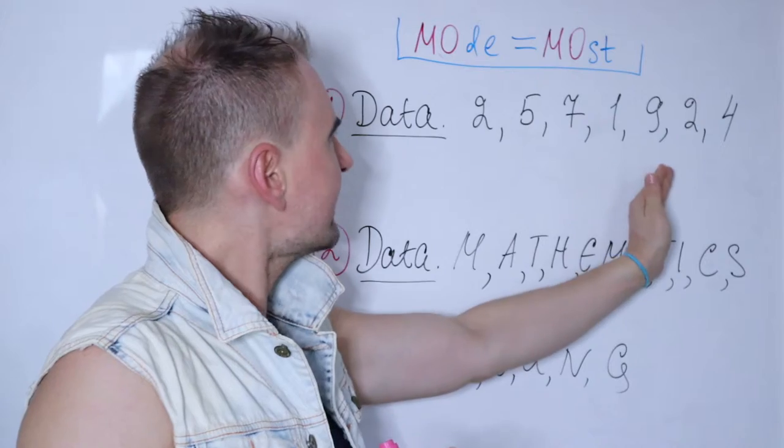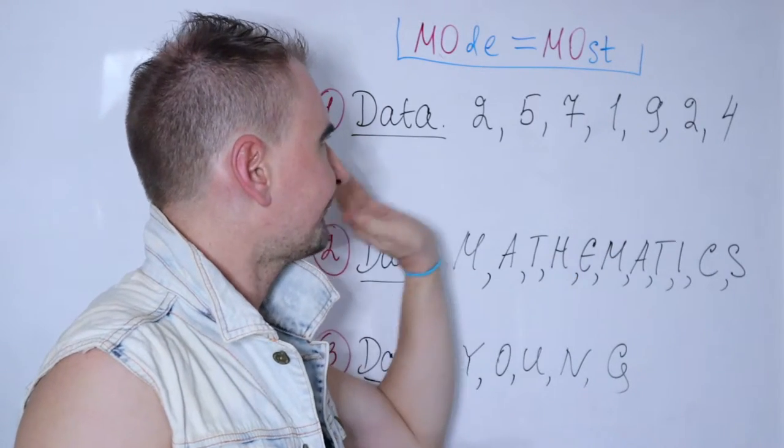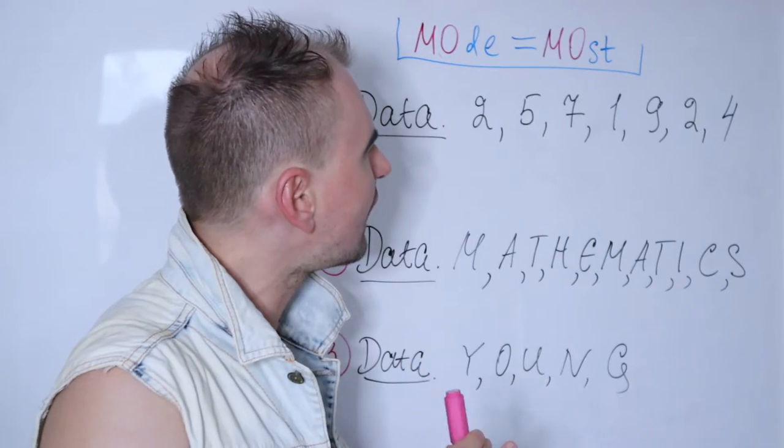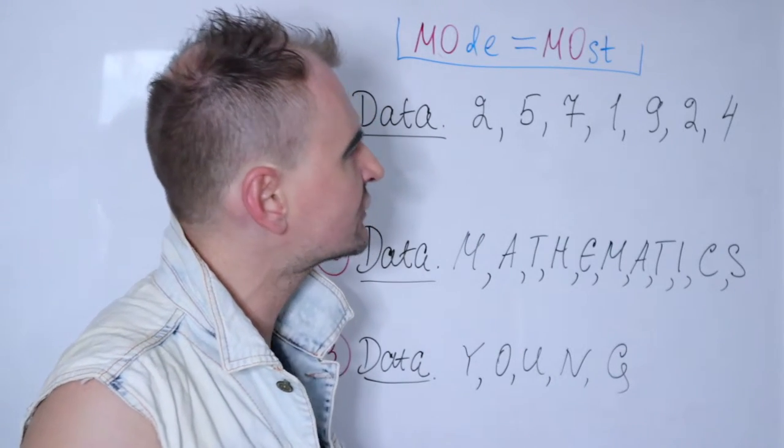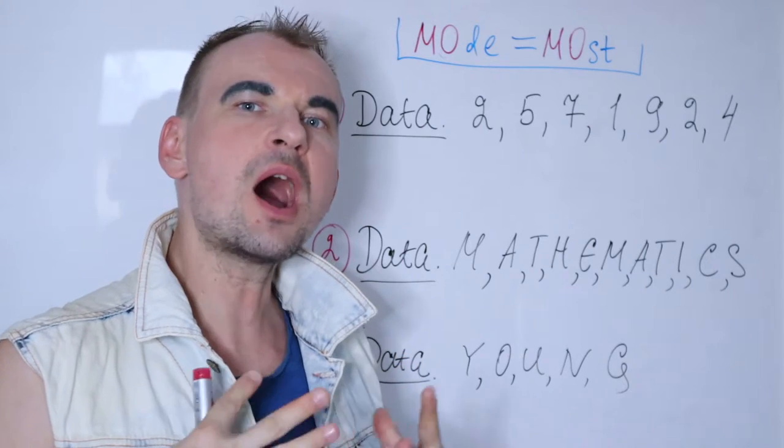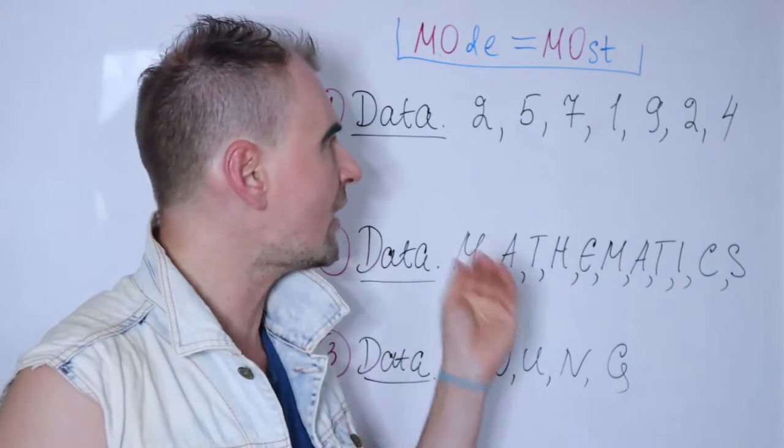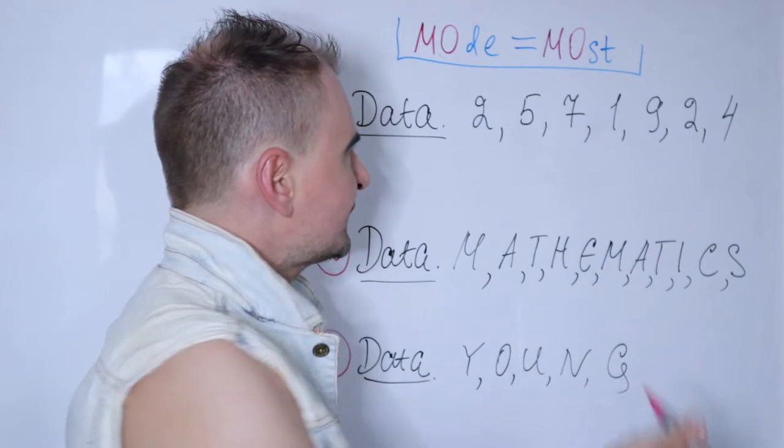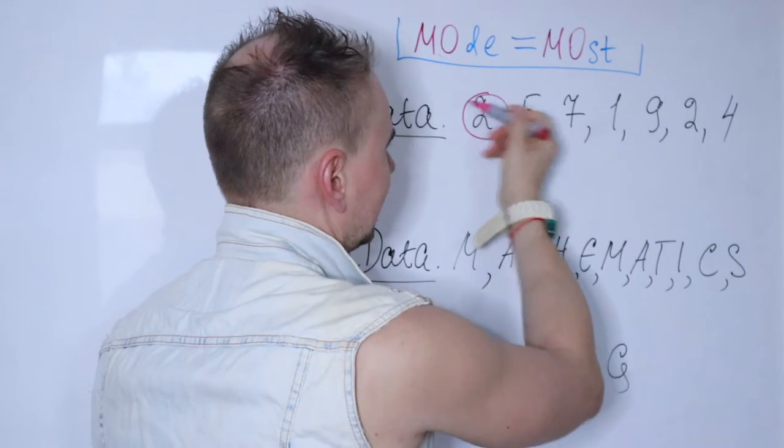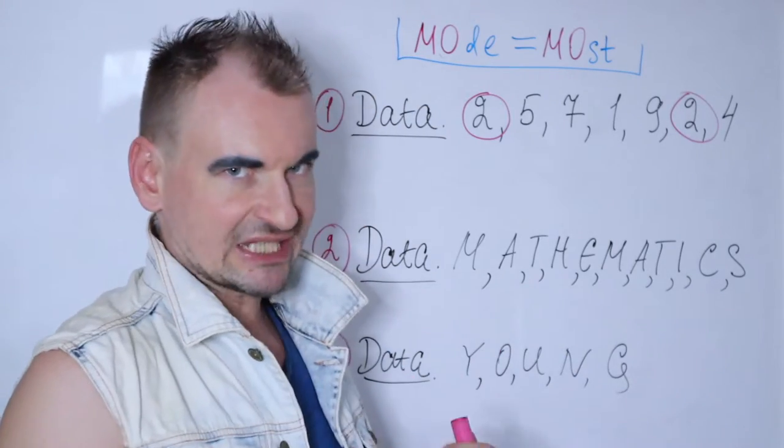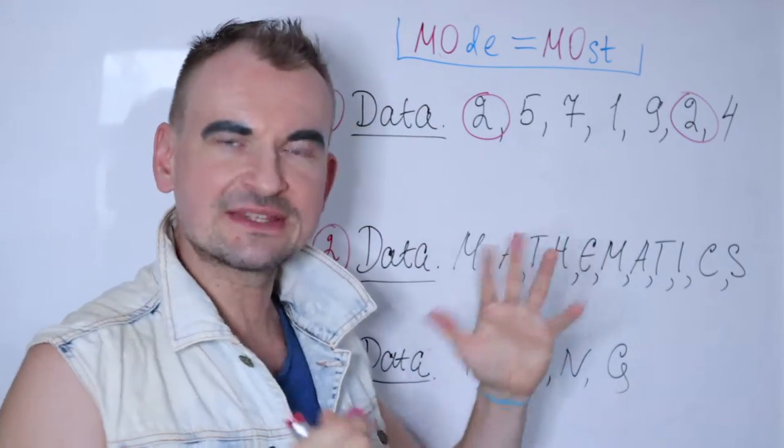Let's say you're given this data - a list of numbers: 2, 5, 7, 1, 9, 2, and 4. You're asked to come up with the mode. Just by observation, you have two 2's that appear in your data set.